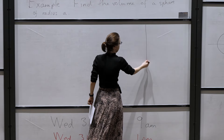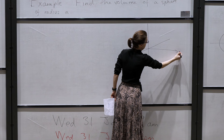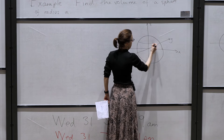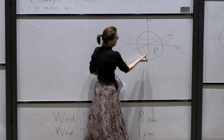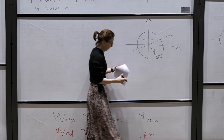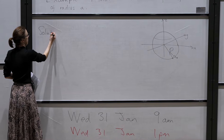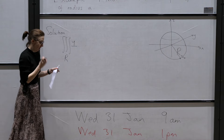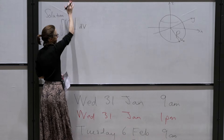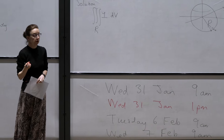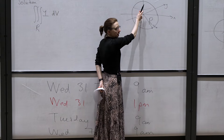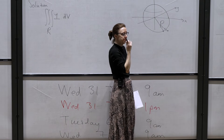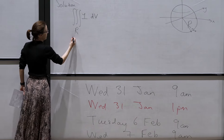I'll draw a picture: x, y, z. I'm integrating over this region in R³ — the region R is a sphere whose radius is given by r equals a. If I want to compute the volume, I just integrate over the three-dimensional domain: the integral over R of dv. In spherical polar coordinates, all the points within this sphere have distance from the origin less than or equal to a. This region R corresponds to r less than or equal to a.